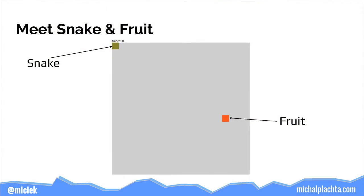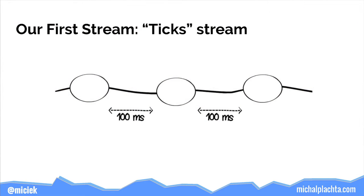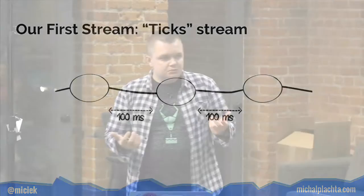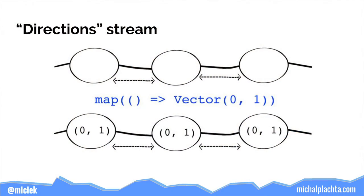Let's meet the main characters for today. There is a board, a green square which is a snake — just one square — and a fruit which is also a green square. This is our first stream: a stream of empty objects output every 100 milliseconds, called the tick stream. Out of it, we can create a new stream — all streams we create are immutable.